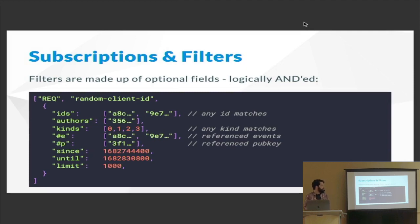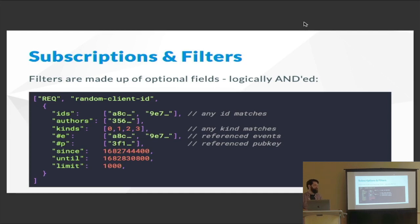Now we want to search for events, so here's an example of a subscription with filters. We have the REQ command to open a subscription, with a subscription ID, and in this case one filter. The filter fields are quite similar to the event fields but not exactly the same — many are plural versions. Where an event has an ID, a filter has IDs; where an event has kind, a filter has kinds. So you can say you're interested in events with a kind that's 0, 1, 2, or 3. As you add additional fields onto a filter it's an AND condition — they all must match. Most filters you see don't have too many conditions.